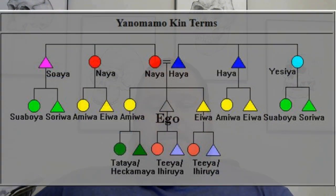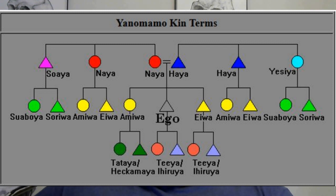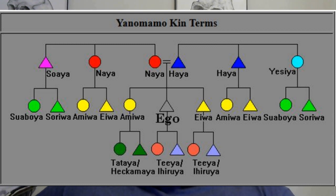This is a Yanomamo kinship chart. It follows the Iroquois classification pattern. The major features of this system are the application of a bifurcate merging rule. Basically, the father's brother and father are merged into a single term, but is different than the mother's brother. Ego's blue triangle, indicating his father, is Haya. The father's brother is also called Haya.